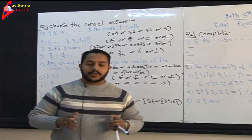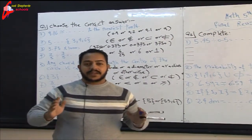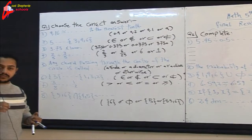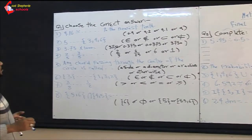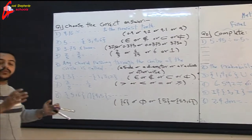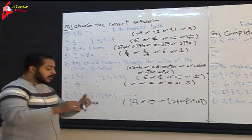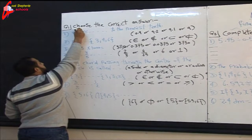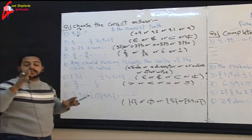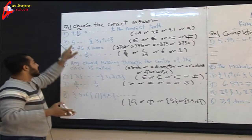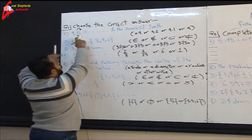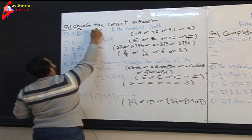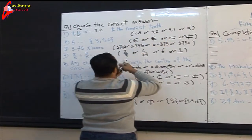Good morning students. Today we will make a final revision and solve very important problems. Question one: 9.16 approximately equal to — we want to approximate to the nearest tenth. The place value of tenths is one, we look at the next digit which is six, so we add one more. One becomes two, and the remainder stays the same. Our answer is 9.2.